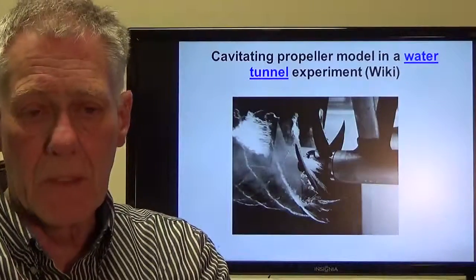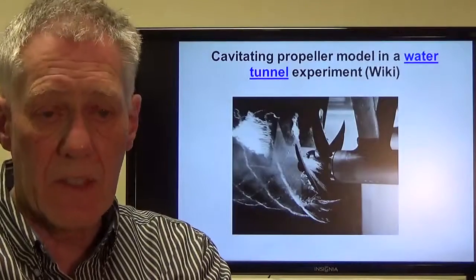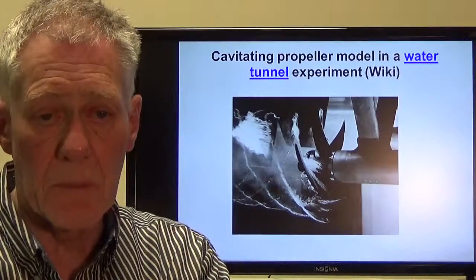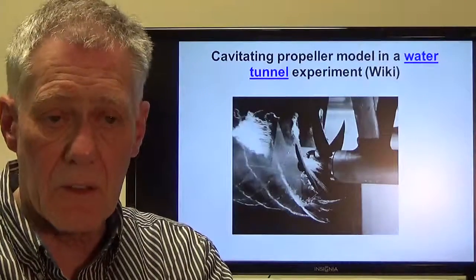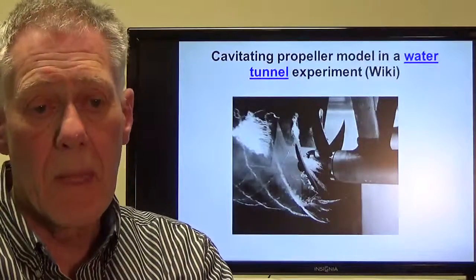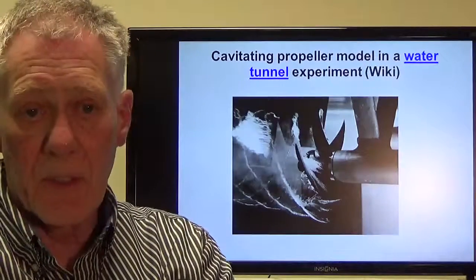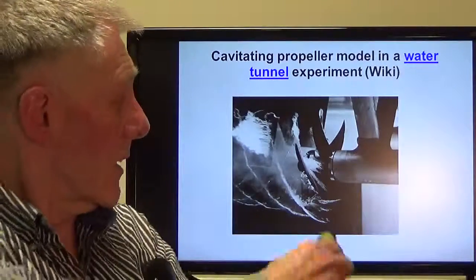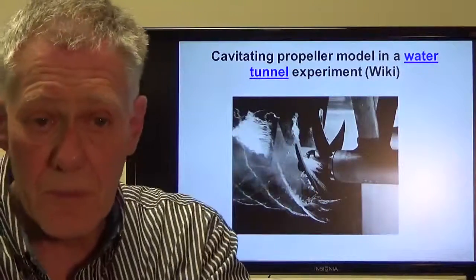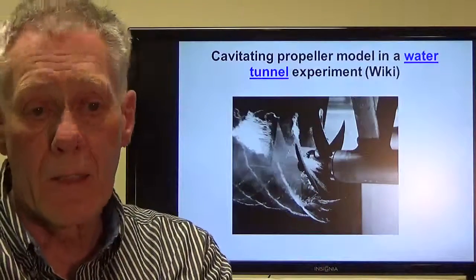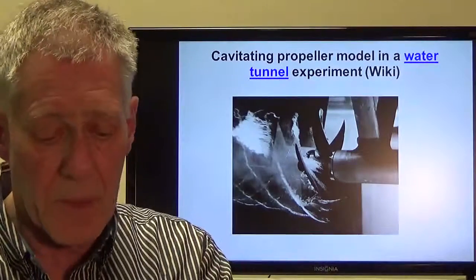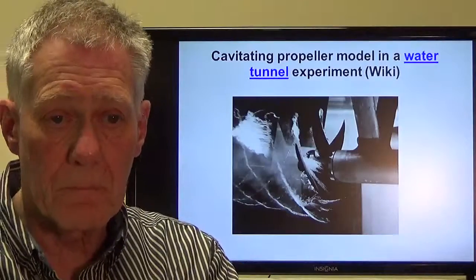Now, cavitation isn't just a phenomenon that occurs in plastic tubes in the basement of a house. It actually occurs on propellers in water. In this case, it's in a water tunnel, and you can see the cavitation bubbles on the surface of the blade and on the tip vortices coming off the tips of the blade. The same sort of thing happens at full scale with ship propellers operating at high speed.